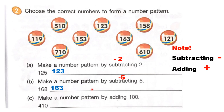You can make the pattern until the end, okay? Any number — you can continue. Next, make a number pattern by adding 100. Adding 100 means plus 100. 410 plus 100 is equal to 510. What is the next of 510? You can make a number pattern here until it is finished.